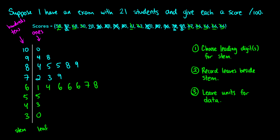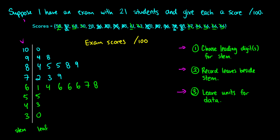So this is the stem and leaf display for the exam scores. The process we've done is we chose our leading digits for the stem and wrote them on the left side. We recorded the leaves beside each stem — this is the remaining one digit. The last thing we should do is leave units for the data so we know how to interpret this graph. We can give this a title: 'Exam Scores out of 100.' Now if we remove some of the clutter, we have our clean stem and leaf display.